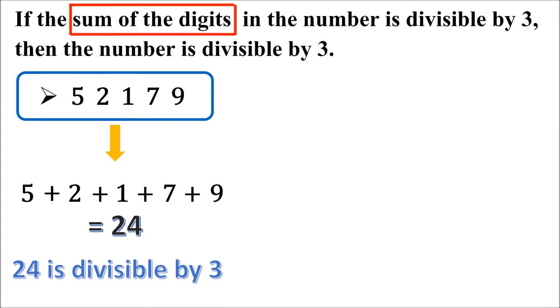Since 3 times 8 is 24, and if the sum of the digits of a given number is divisible by 3, then the number is divisible by 3. So this number is divisible by 3.